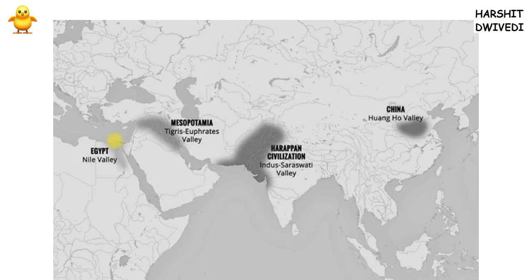There was the Egyptian civilization on the Nile River, the Mesopotamian civilization on the Tigris-Euphrates River, and the Harappan civilization in the Saraswati Valley — on the Ghaggar-Hakra River. However, the course of all those rivers has changed now and the Saraswati River has actually disappeared.